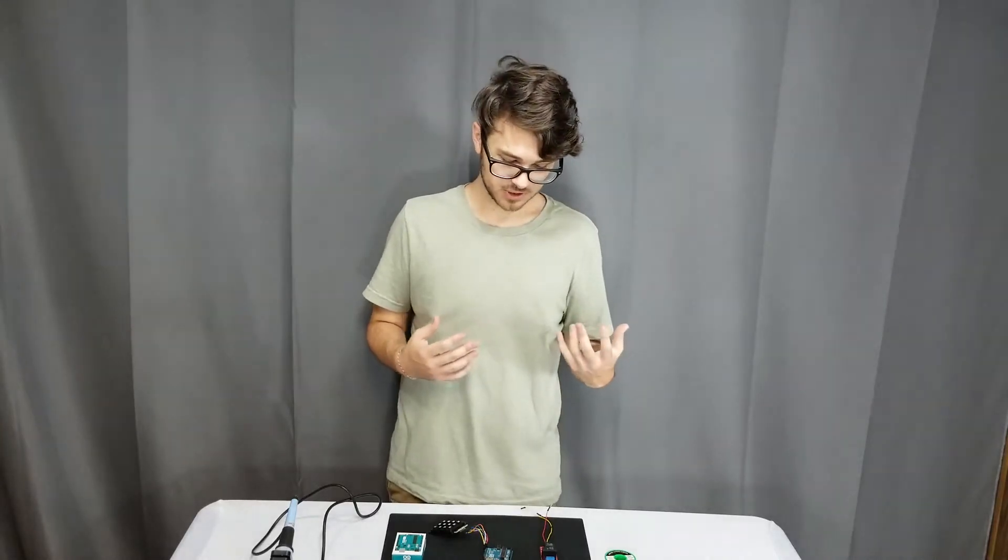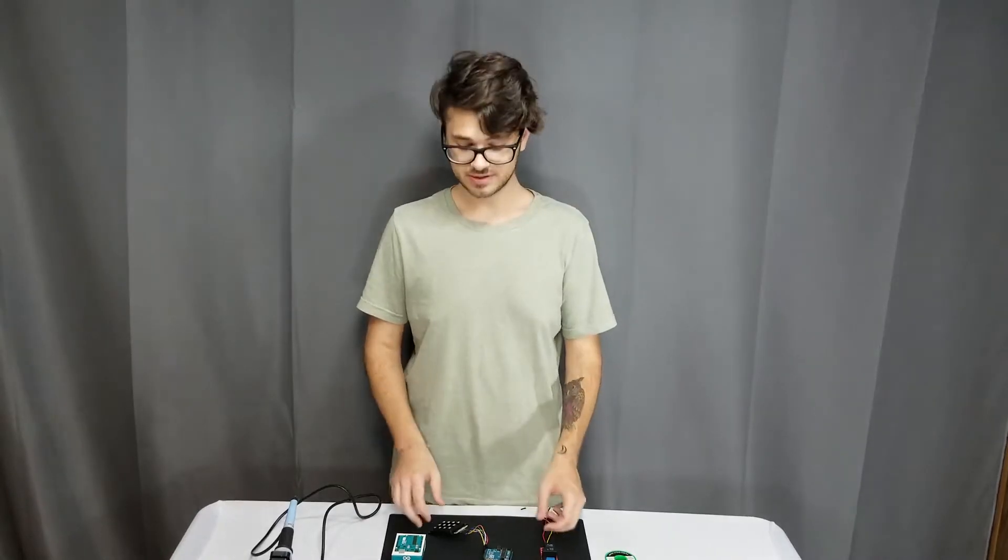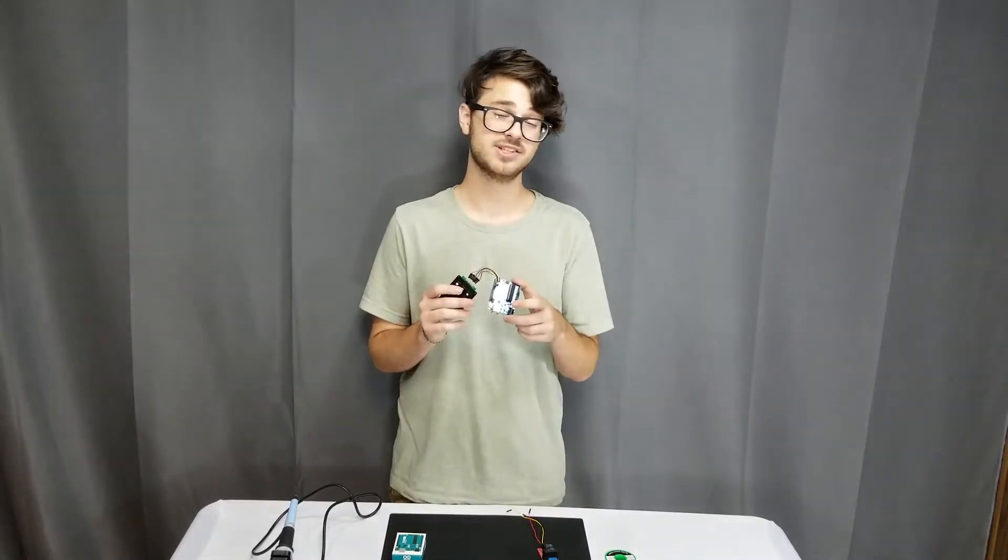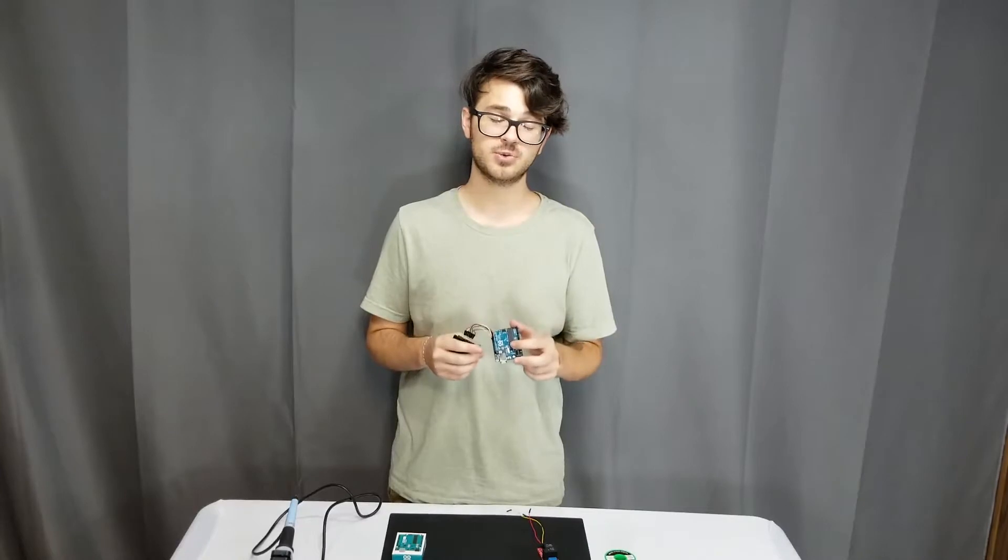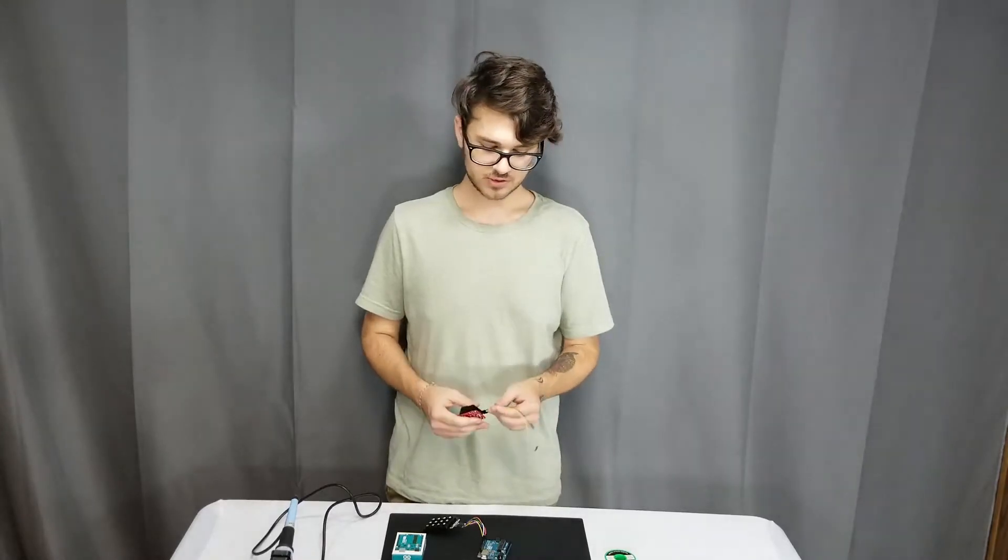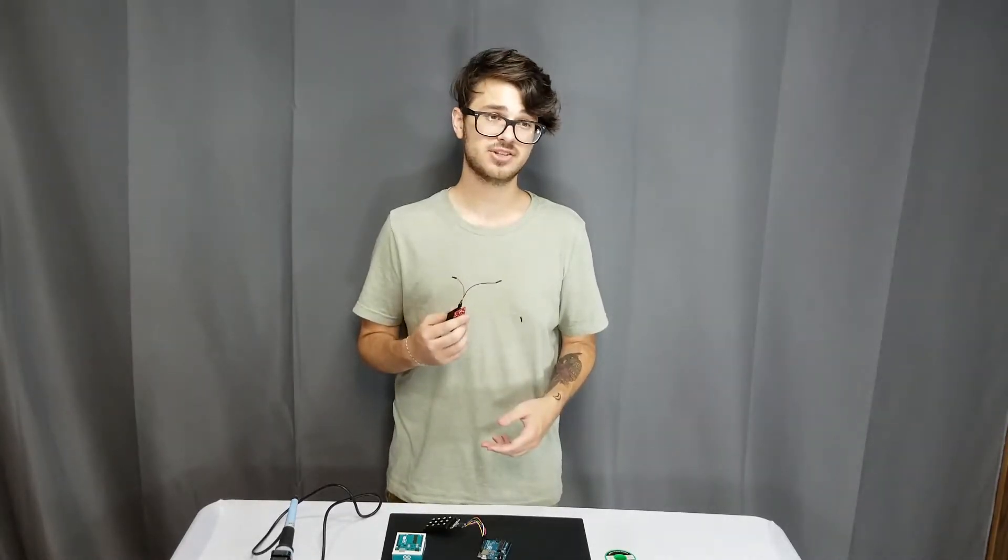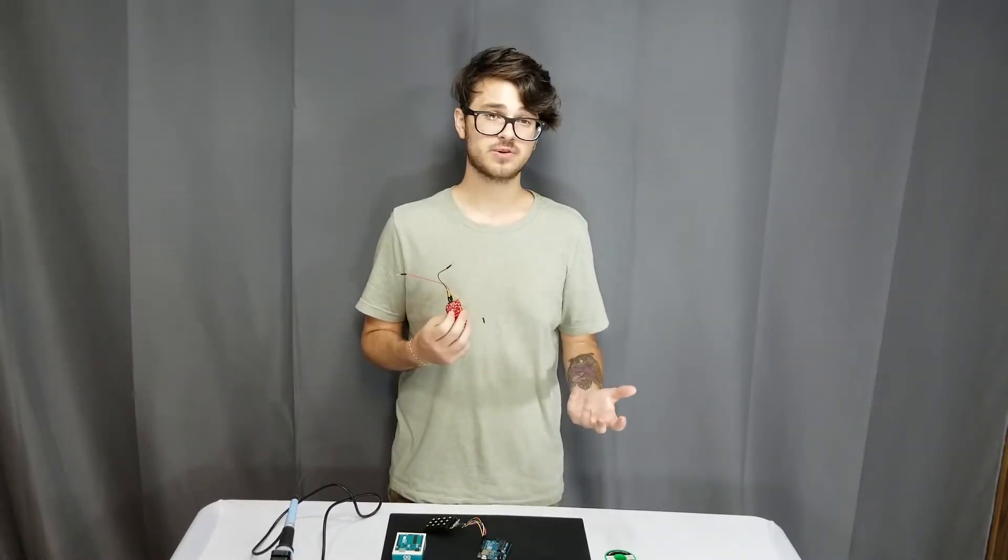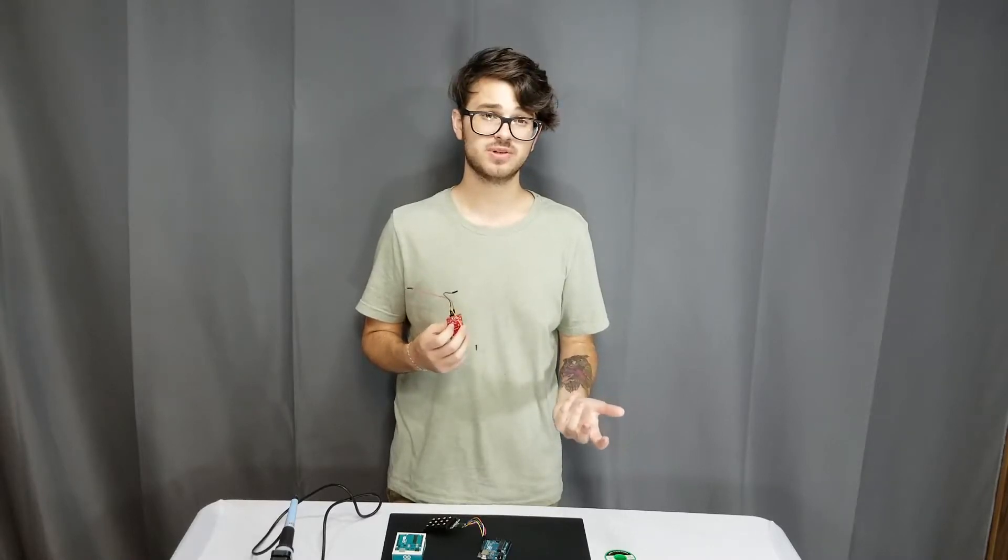Now if you just want this module to act as a button, you can stop right here and just put the code on the Arduino that I provided down below. But I like to have things be used for multiple things. So I added a relay kit so it can actually do reed activated switches, which is really nice.